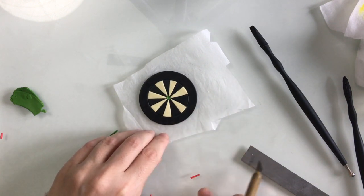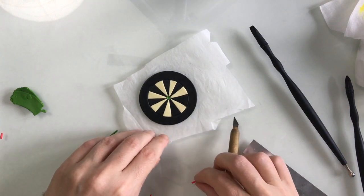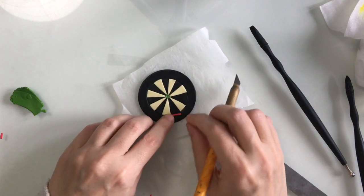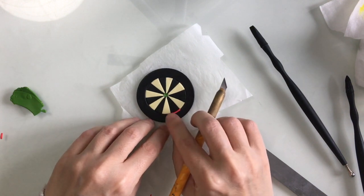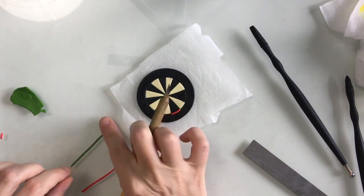It just needs to kind of look like a dartboard really, but if you were to do this, you could spend a little more time making yours more of a scale model maybe. I'm happy to have 16 sections instead of 20 on this one.